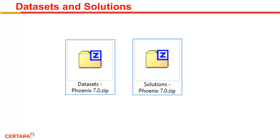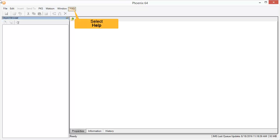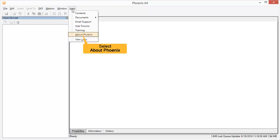Both zip files can be found in the file repository area at the bottom of the videos. To confirm your version of Phoenix, launch the application, select the File menu, then Help, and select About Phoenix.